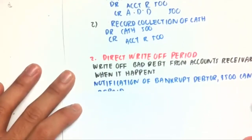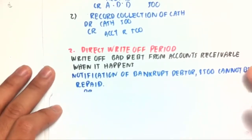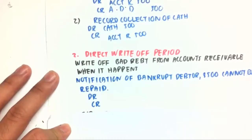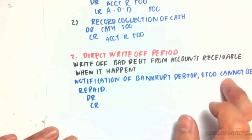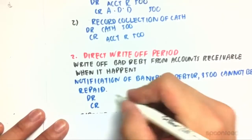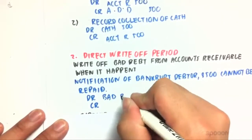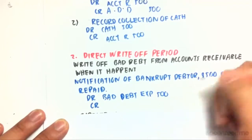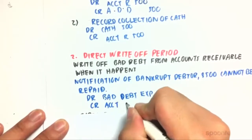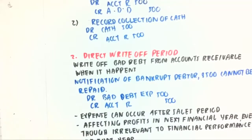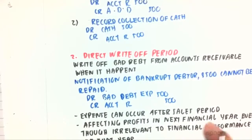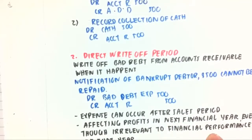The second method is the direct write-off method. That involves recording bad debt expense right at the time when the accounts receivable is recognized as uncollectible. For example, on notification of bankruptcy for $500 where the debtor cannot repay us, we debit bad debt expense and credit accounts receivable $500 at that time. The problem is the expense can occur after the sales period, which will affect profits in the next financial year even though it's irrelevant to the financial performance of that year itself.